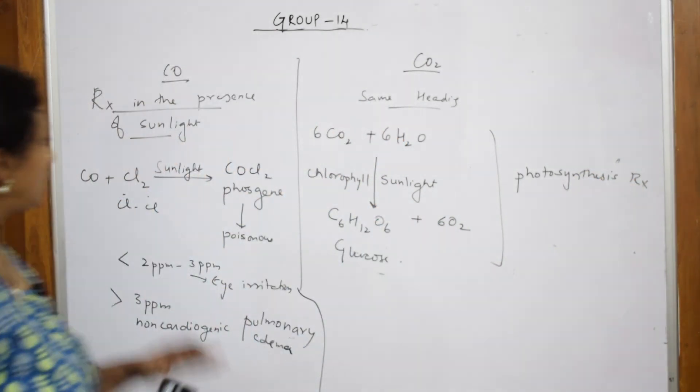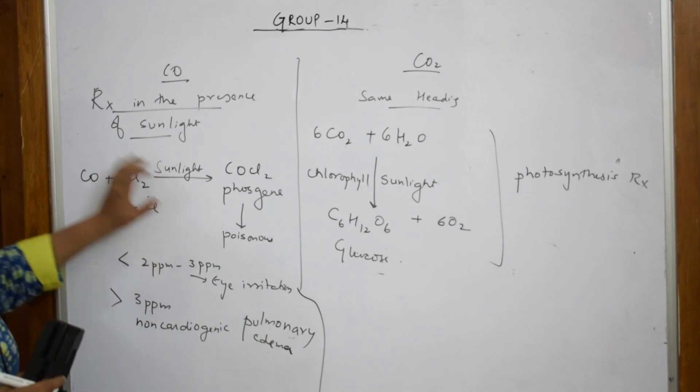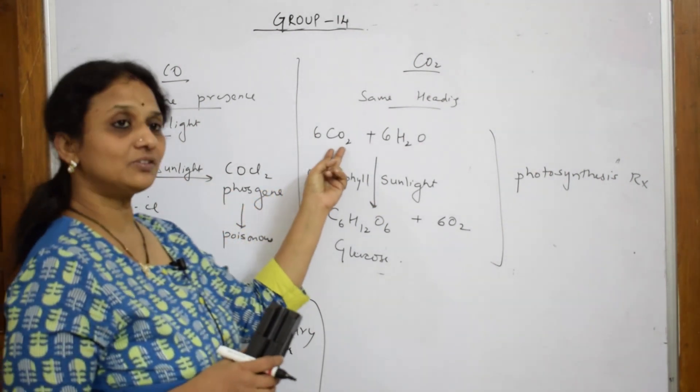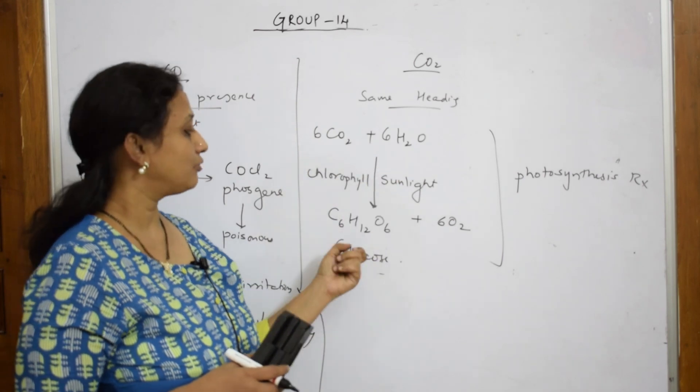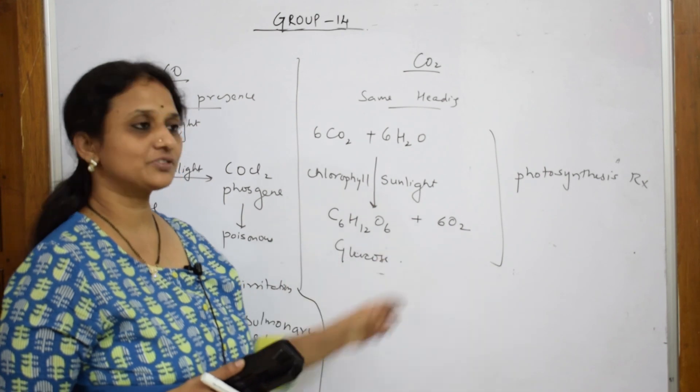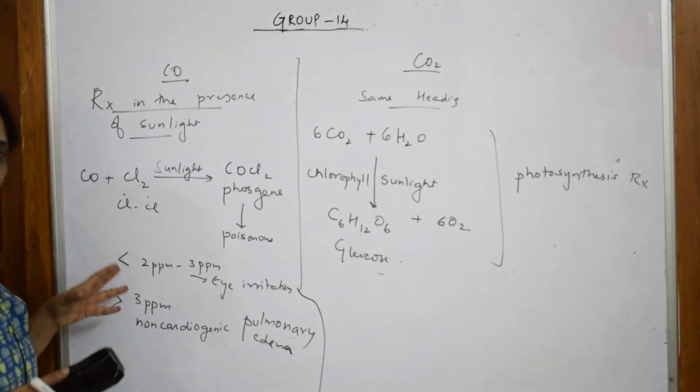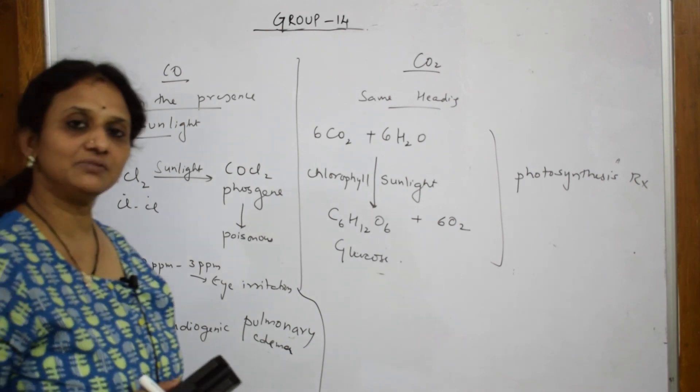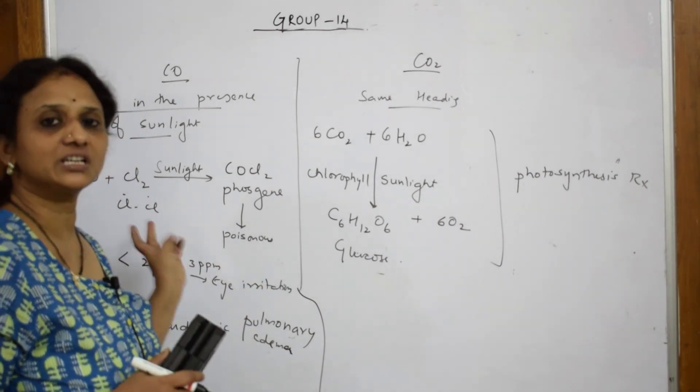Just observe - carbon monoxide in the presence of sunlight combines and forms phosgene, a poisonous gas. But the same, this carbon dioxide, it combines with water forming our reserve food for all the plants around us. This is your photosynthesis reaction versus poisonous release of phosgene gas. The main reason for me giving together is you will have a comparative study between both.